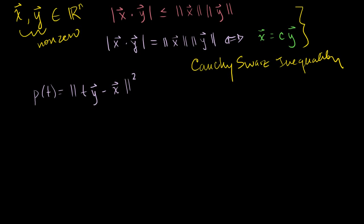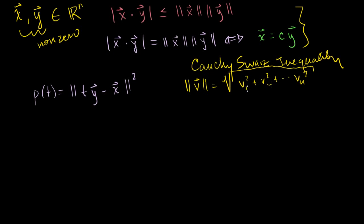Before moving forward, I want to make one point. If I take the length of any real vector v, this is going to be greater than or equal to 0. Because the length is the square root of the sum of each component squared — v1 squared, v2 squared, all the way to vn squared. All of these are real numbers; when you square a real number you get something ≥ 0. Sum them up, take the positive square root, and you get something ≥ 0.